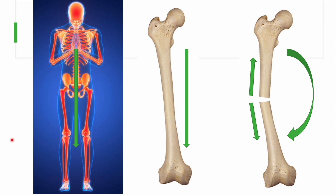For example, if we take the femur bone, the weight-bearing axis is medial to the shaft of the femur, and if you see the morphology of the femur it is slightly curved. You can see that the center of the hip joint and the center of the knee joint are located here, while the remaining part of the femur curves away from these centers.